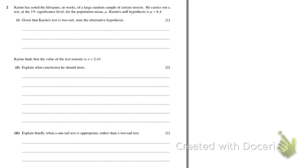Question 2: Karim has noted lifespans in weeks of a large sample of certain insects. He carries out a test at 1% significance level for the population mean mu, and his null hypothesis is mu = 6.4. Given that Karim's test is two-tailed, the alternative hypothesis is H1: mu ≠ 6.4, because the change could be either positive or negative.